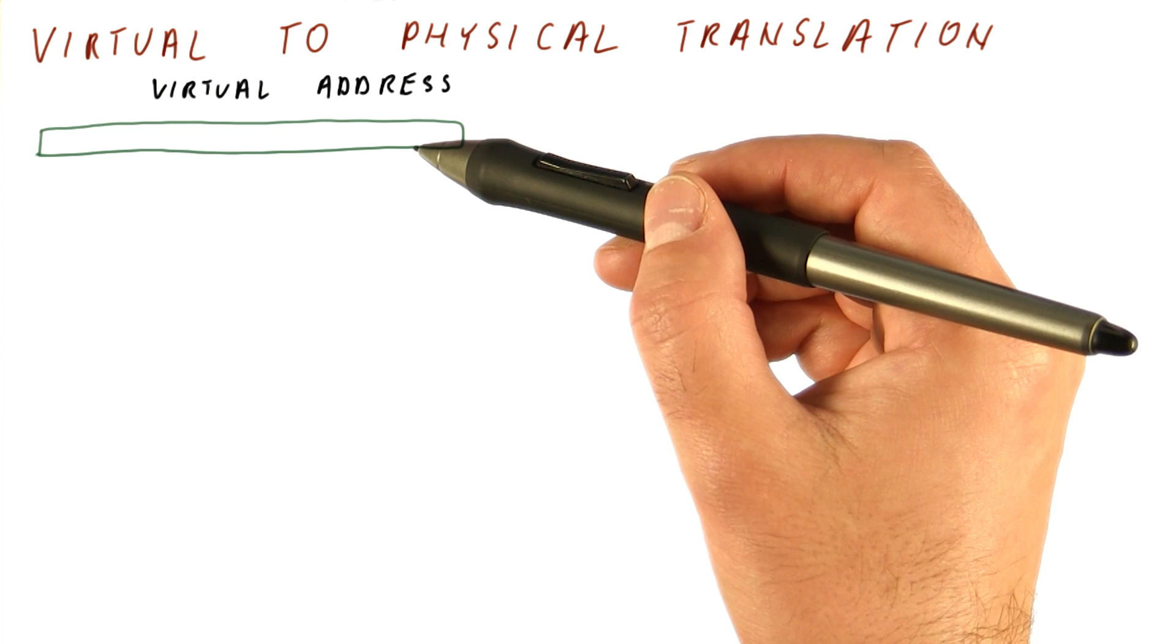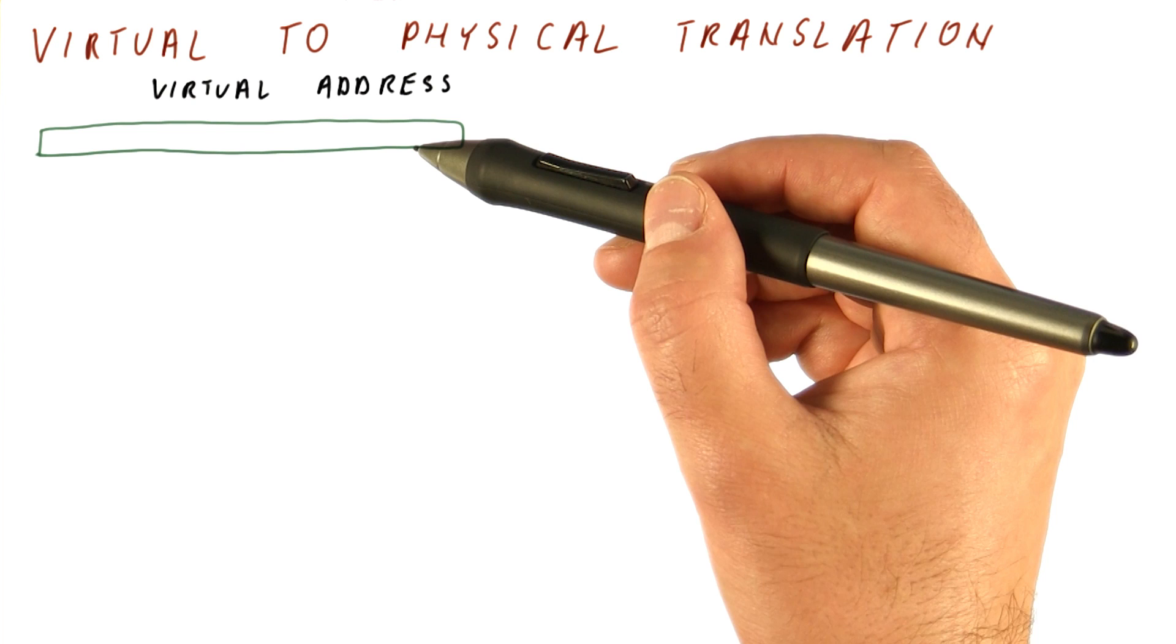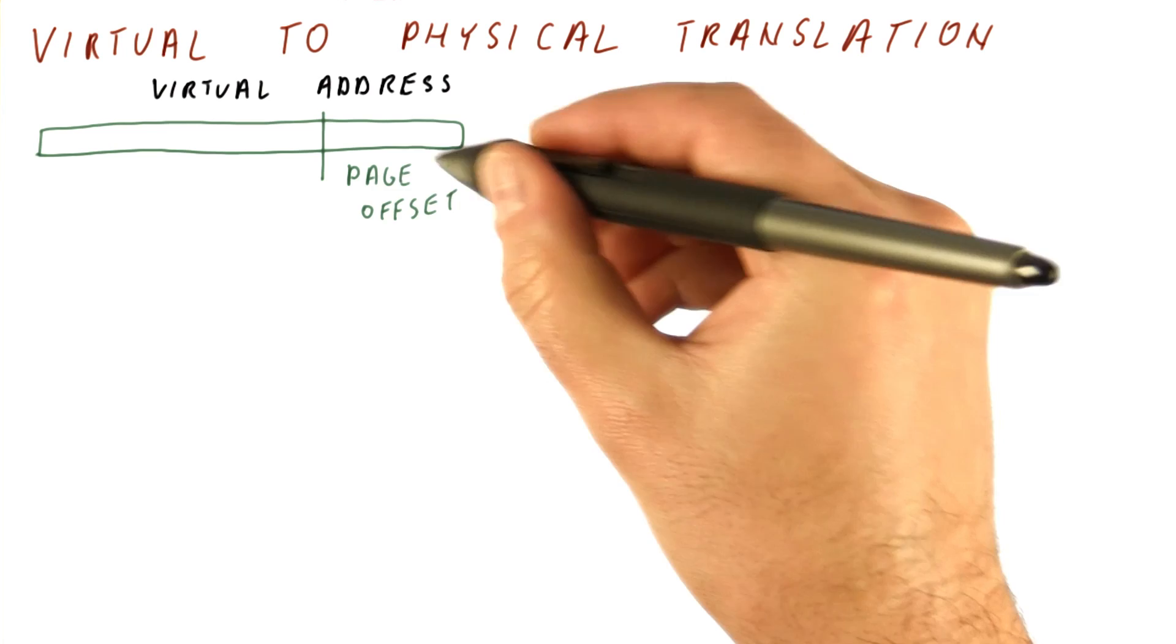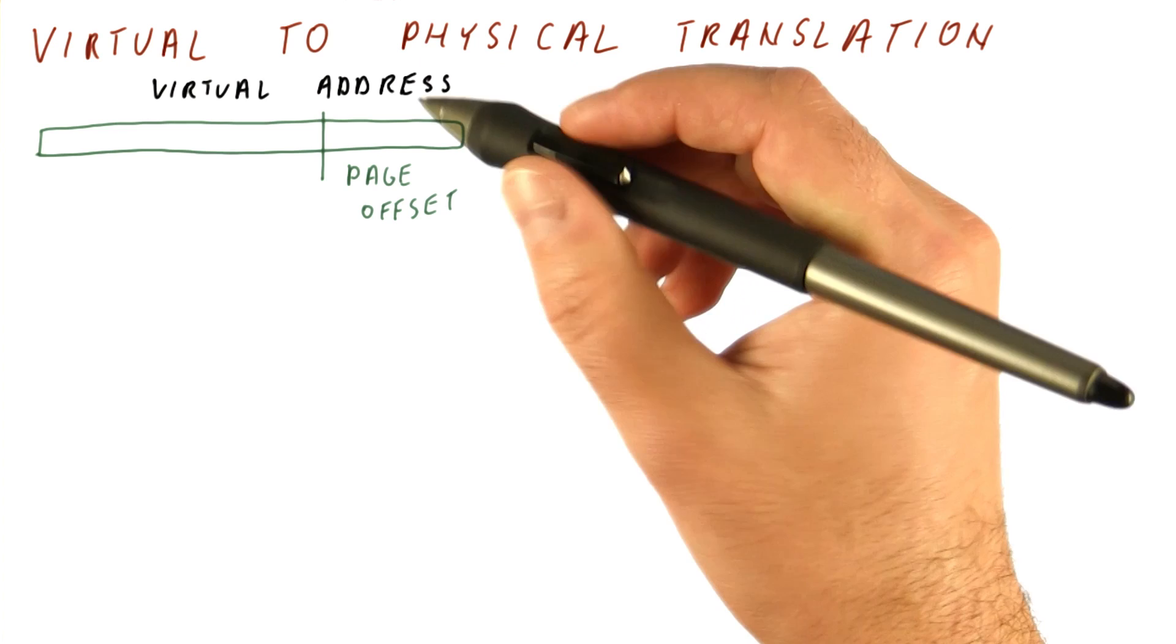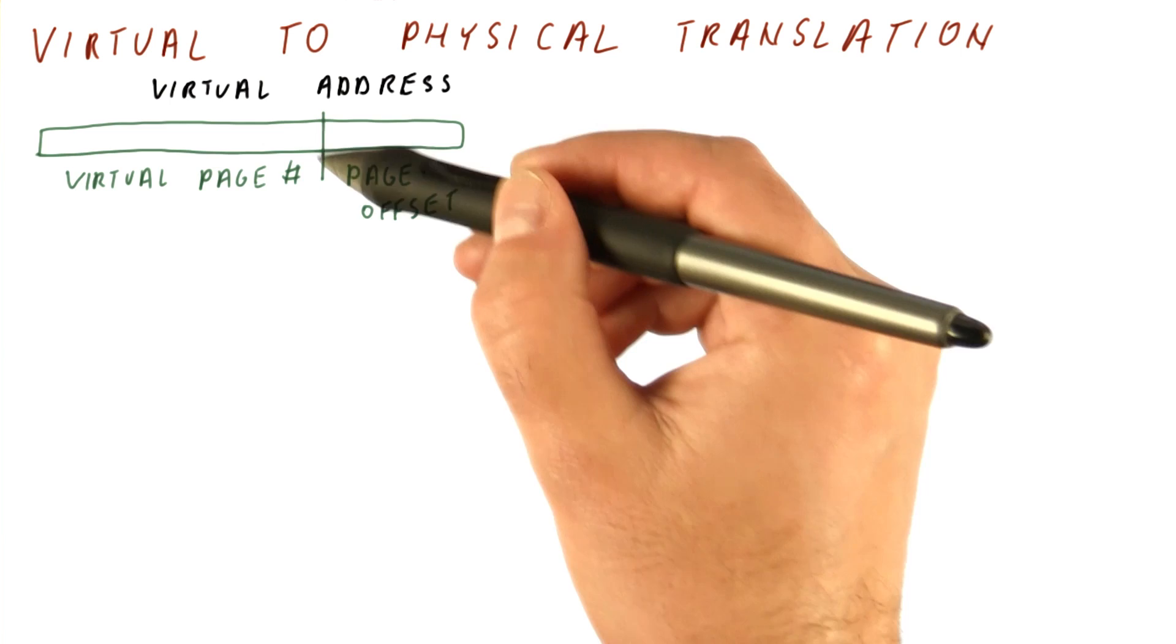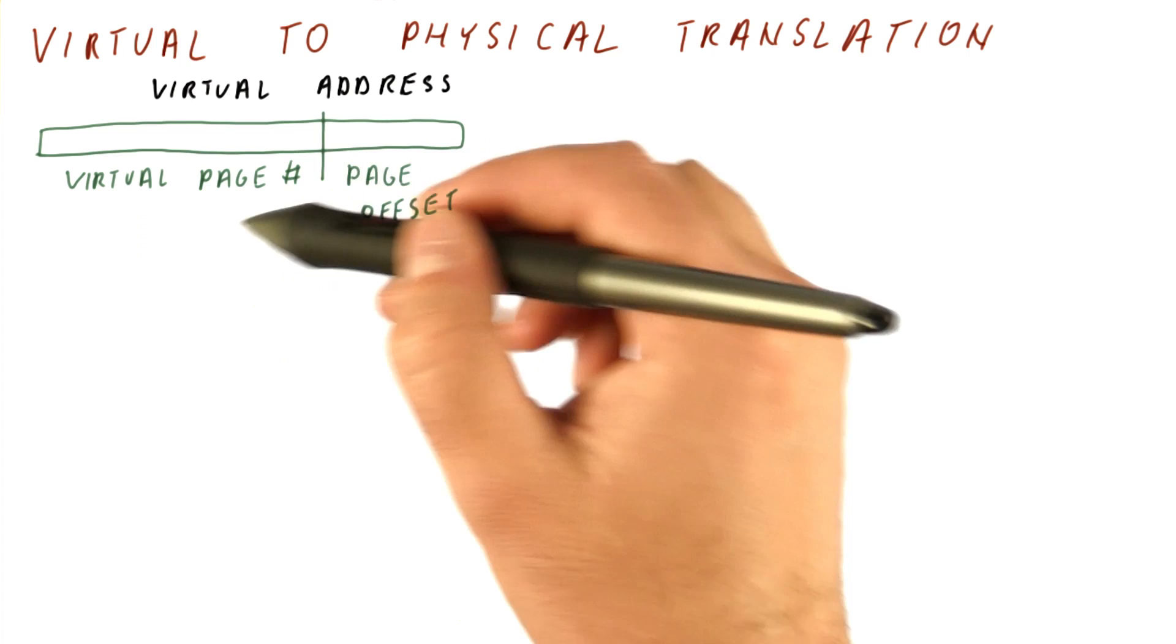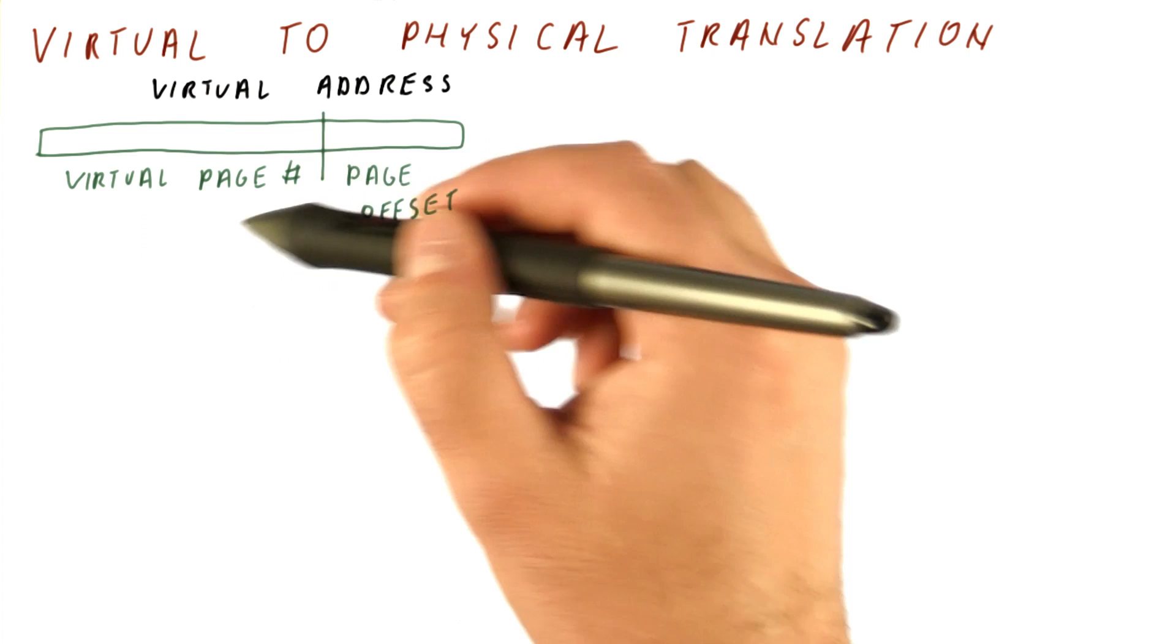The program generates a virtual address, which a load instruction will compute. The processor divides this address into the page offset part, which tells us where in a page we are, and the virtual page number, which tells us which page in the process we're talking about. If we have a 4 kilobyte page, 12 bits tell us where in the page we are, and the remaining bits tell us what the page number is.